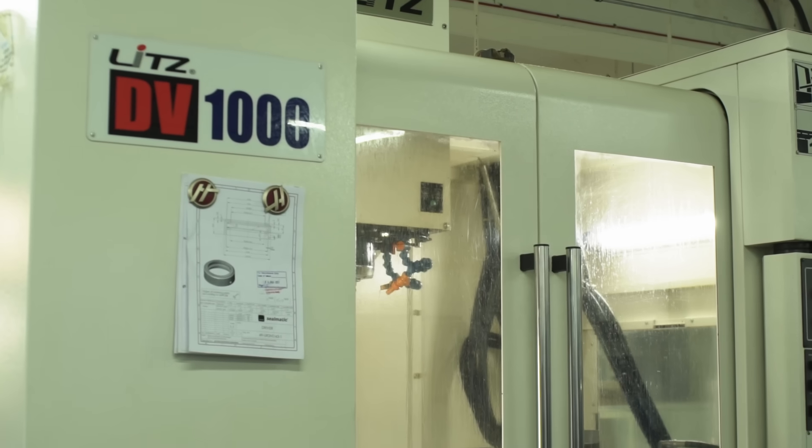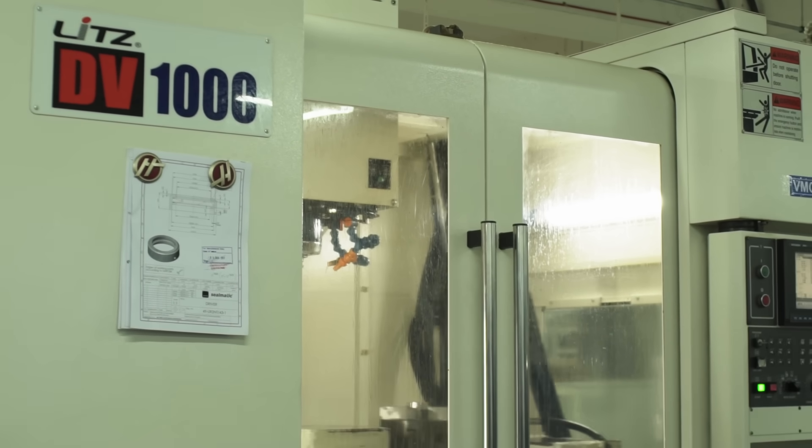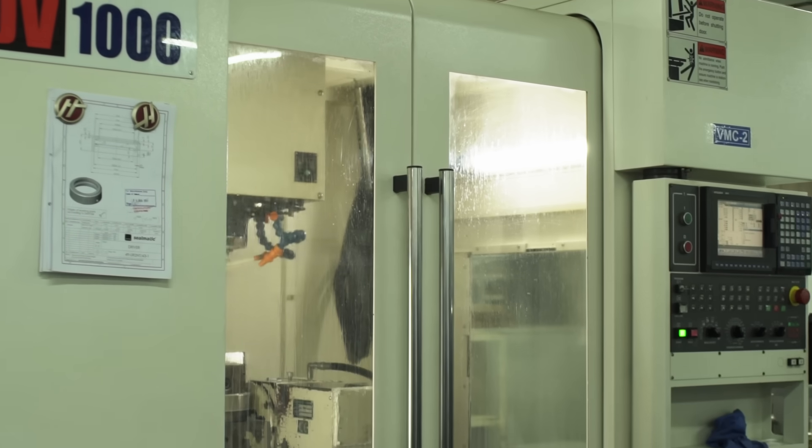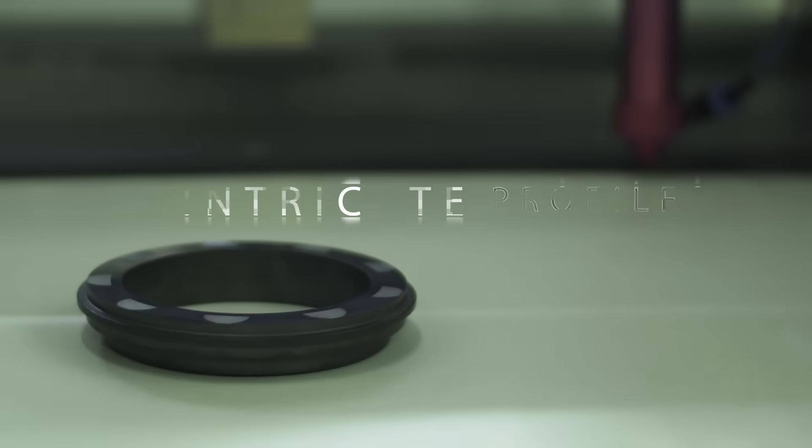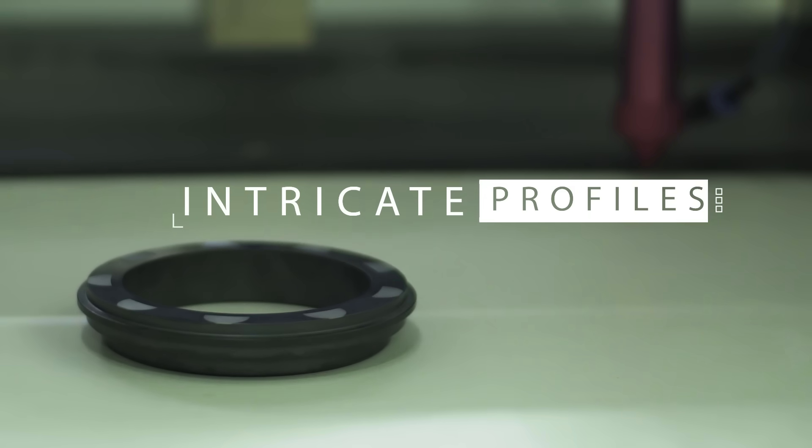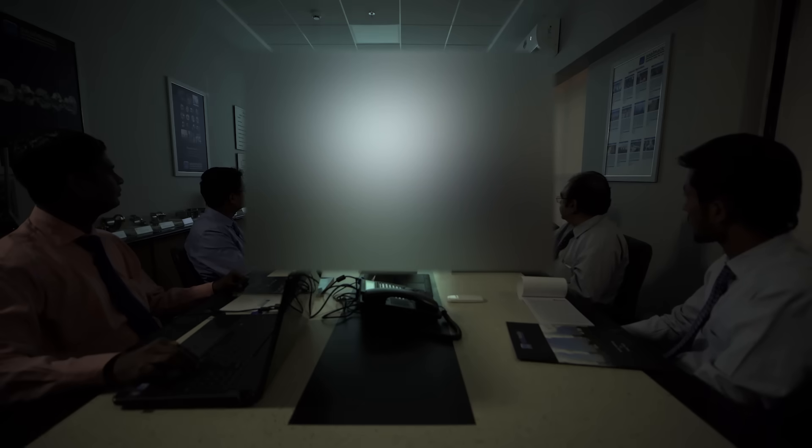Optimization of tooling and processes is ensured to control production costs, making the final product available at a very competitive price. Extremely complicated seal faces for dry gas seals are manufactured under a controlled environment, deploying sophisticated machines to produce intricate profiles. SealMatic has a well-laid-out system for upgrading the skills and knowledge levels of employees to effectively utilize advancement in technology.